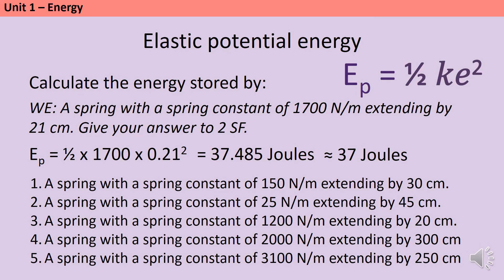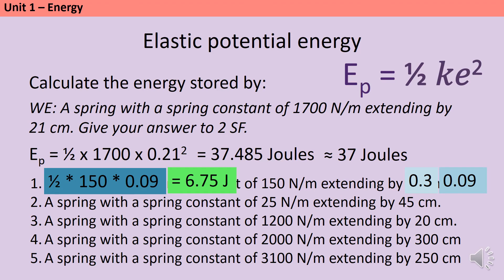Here are five practice questions — remember to convert extension into metres and square it separately before completing the calculation, and give answers to two significant figures. For question one: 30 centimetres is 0.3 metres, and 0.3 squared is 0.09. Plugging in: ½ × 150 × 0.09 gives 6.75, which rounds to 6.8 joules to two significant figures.